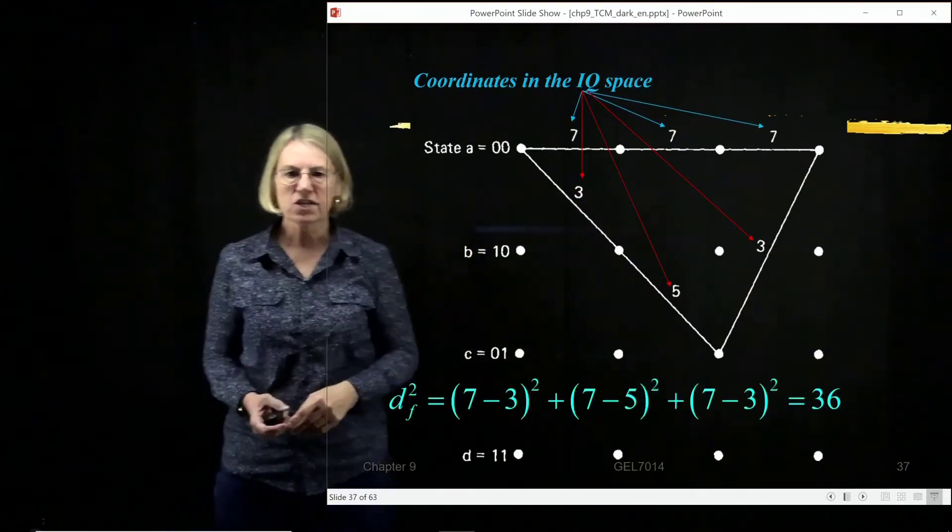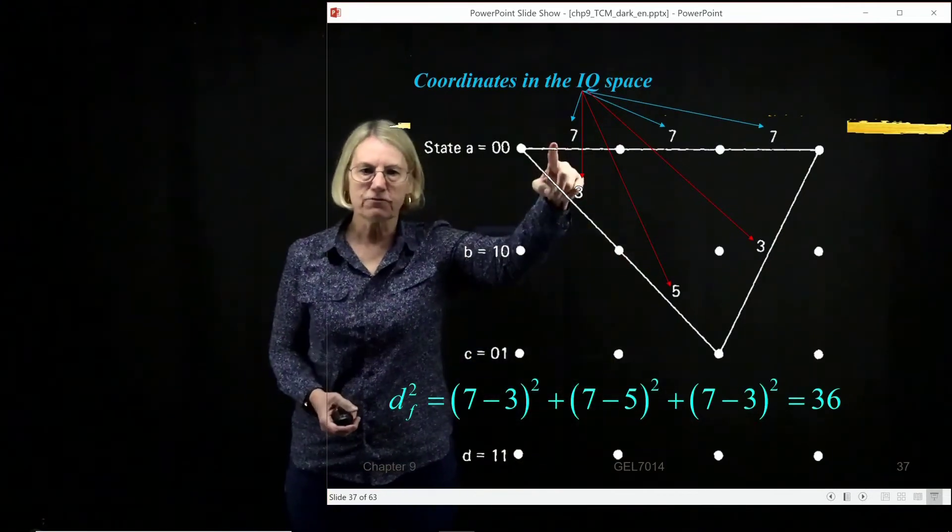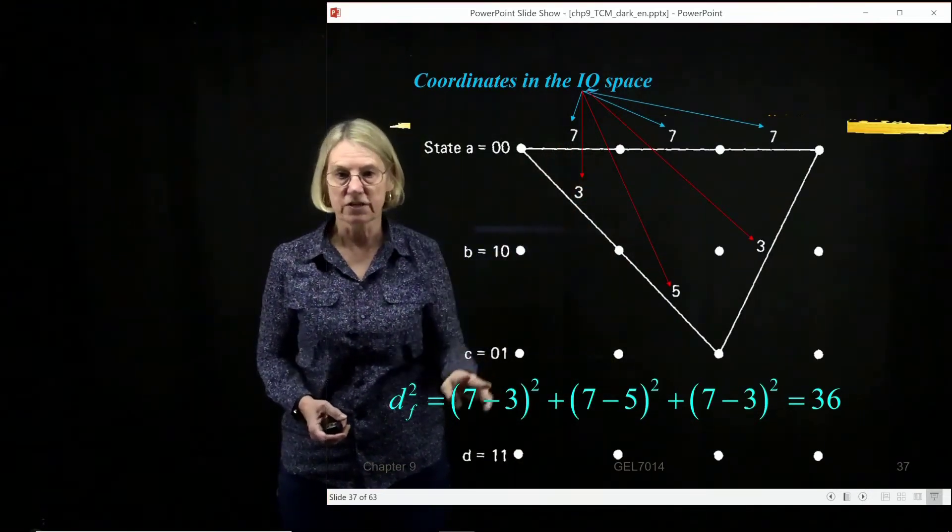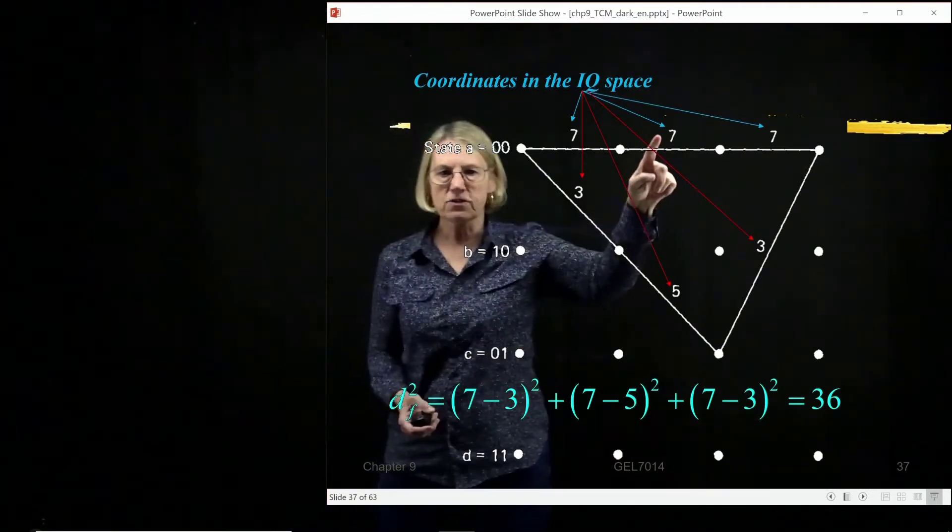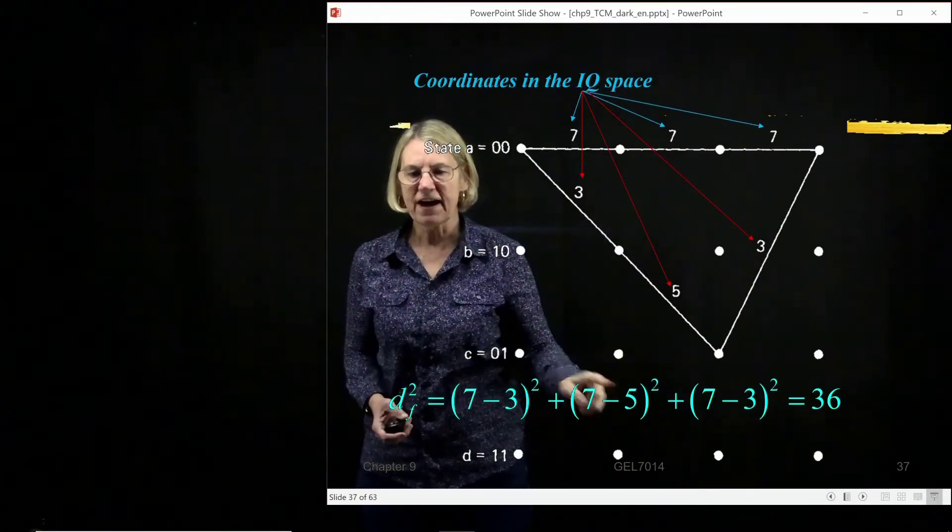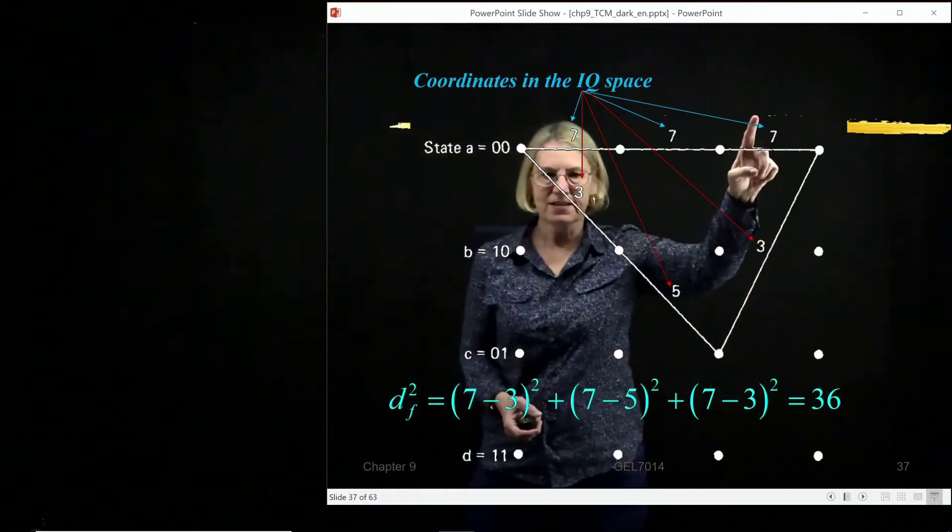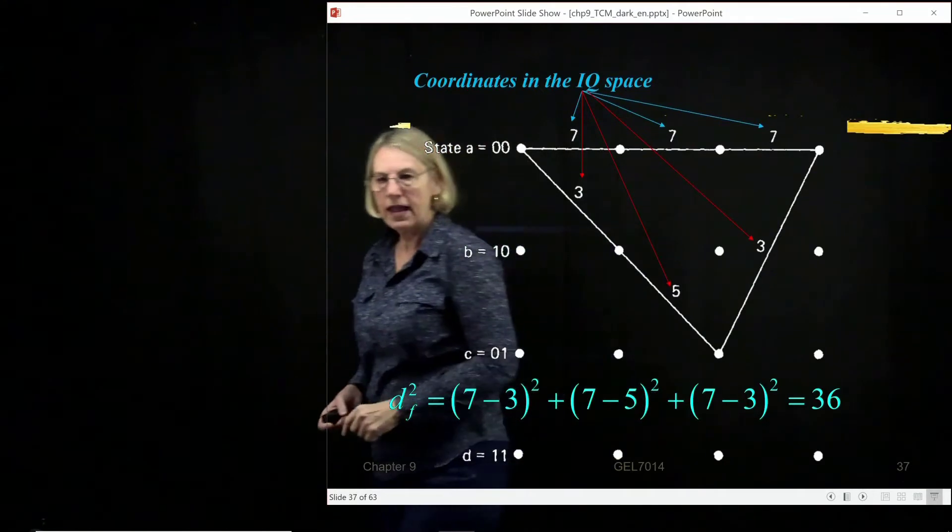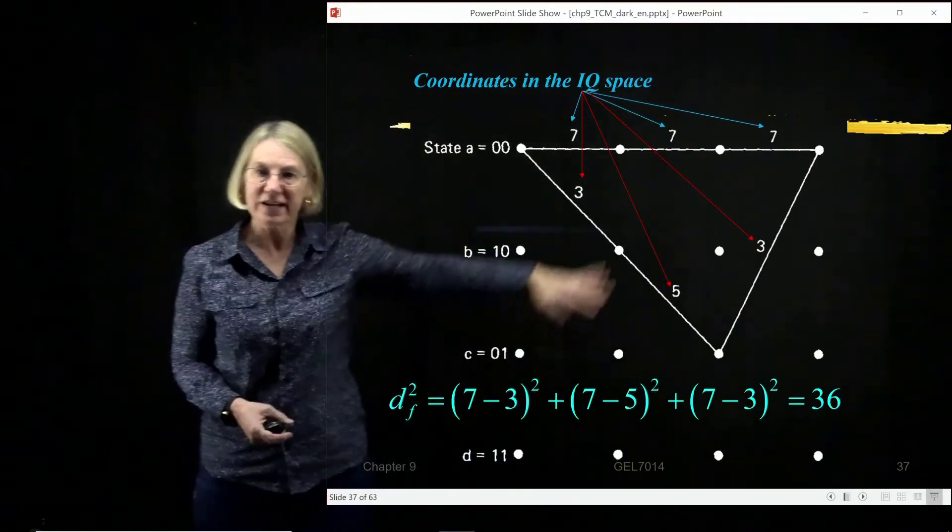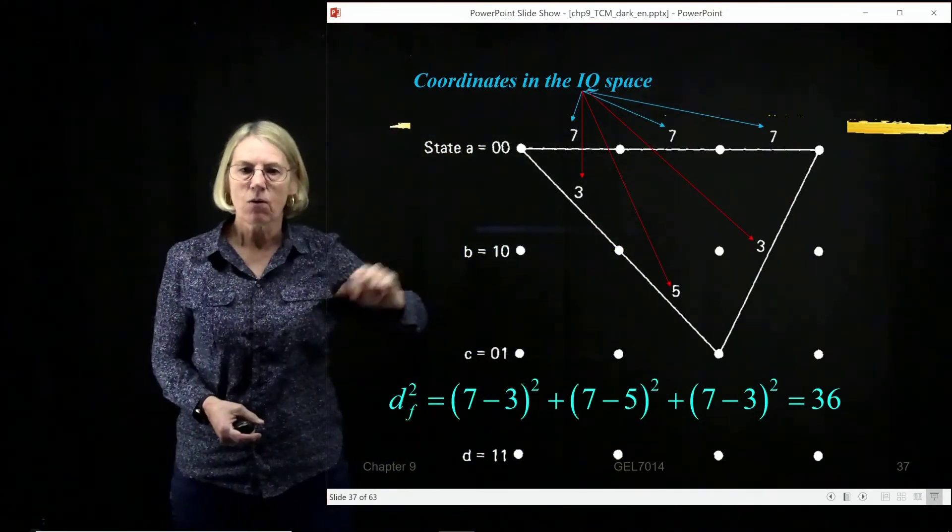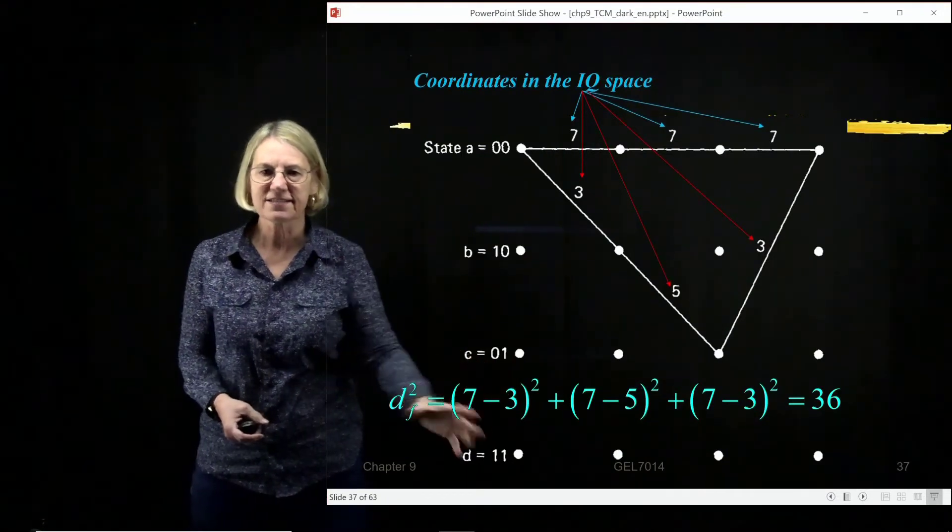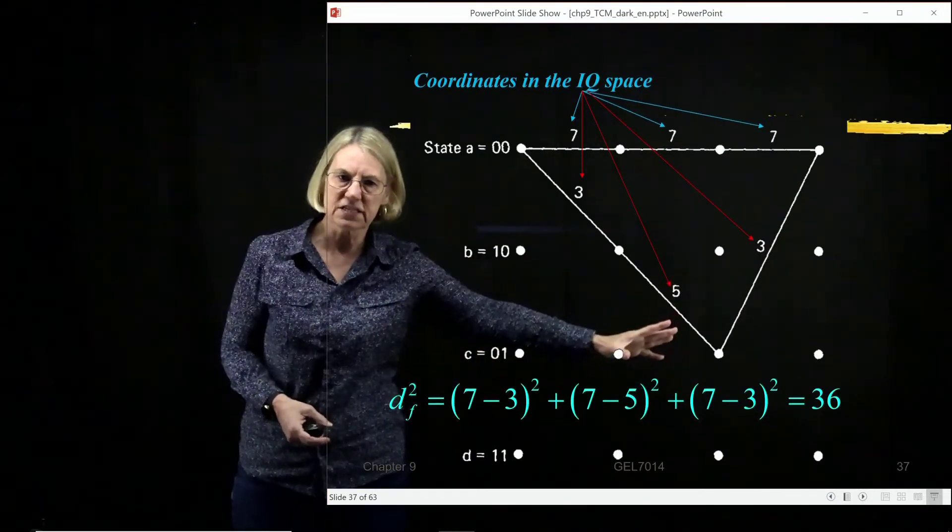So we'll start in this interval. What is the distance between 7 and 3? Of course they're 4 apart. In this interval, the difference between them is 7 and 5, that's 2. And in this branch, the distance between them is 4. And if I want to get the path metric, the Euclidean distance, well in that case I have to take the square of the Euclidean distance is equal to the sum of the squares of the distances.